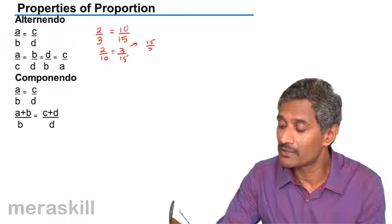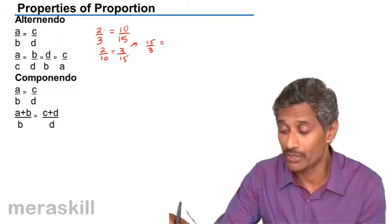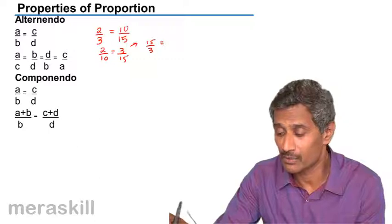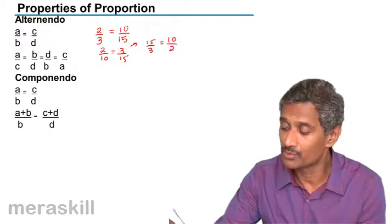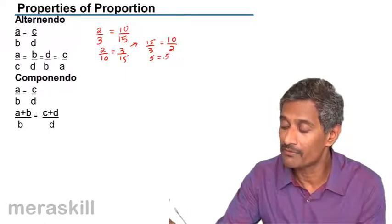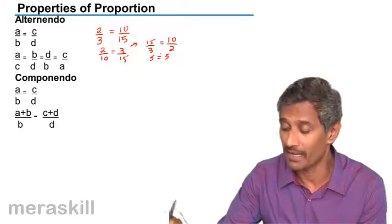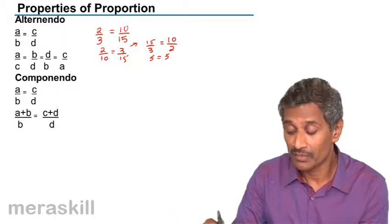15/3. You have taken this here. The consequent of the second ratio becomes the antecedent and vice versa. 10/2. These two are also equal. 5 is to 5, 5 equals 5. So you are alternating the ratios.